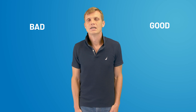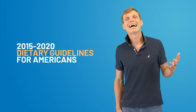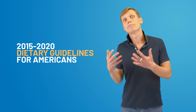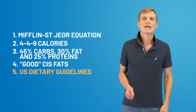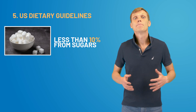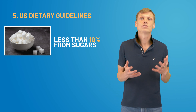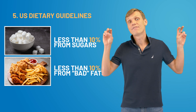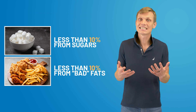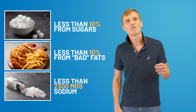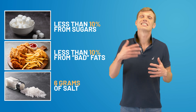There are a lot of discussions about nutrition and diets — what's good and what's bad. The 2015–2020 Dietary Guidelines for Americans tried to provide scientifically grounded recommendations. Fact number five: less than 10% of daily calories must come from sugars or refined carbohydrates, less than 10% from saturated fat (the bad fats), and less than 2,300mg of sodium should be consumed daily — the equivalent of about 6 grams of salt.